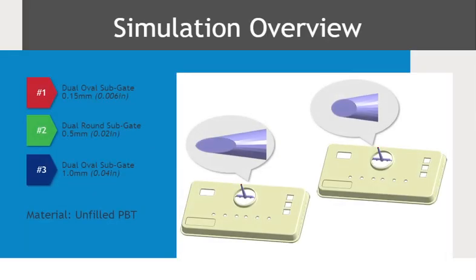For this lesson, we will evaluate oval and round sub-gate designs. Our focus will be on shear rates, pressure, and clamp tonnages for the two different gate styles in three sizes. The designs are shown on screen. The part will be molded in an unfilled PBT material.